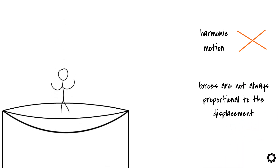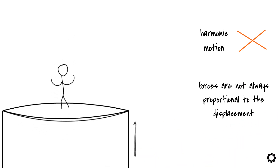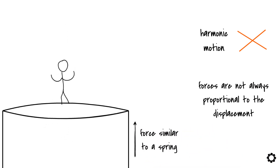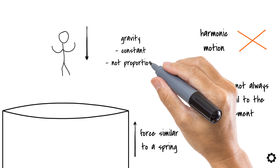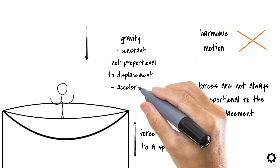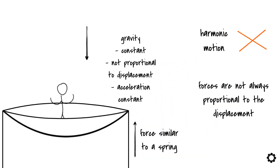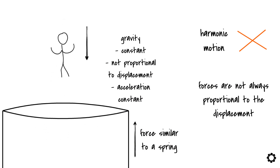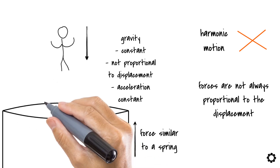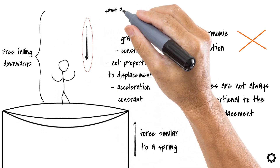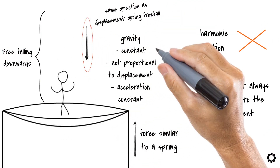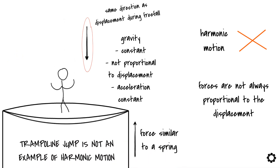When the child's feet touch the trampoline, the trampoline exerts a force similar to a spring — it is actually a combination of multiple springs. But when the child is in the air, the acting force is only gravity, which is constant and not proportional to the displacement. The acceleration during this part of the cycle is constant, which contradicts the characteristic acceleration plot for harmonic motion. Moreover, gravity is always acting downwards, so for the part of the cycle where the kid is free-falling downwards, the force is not even in the direction opposite to the displacement. This is why a trampoline jump is not an example of harmonic motion.